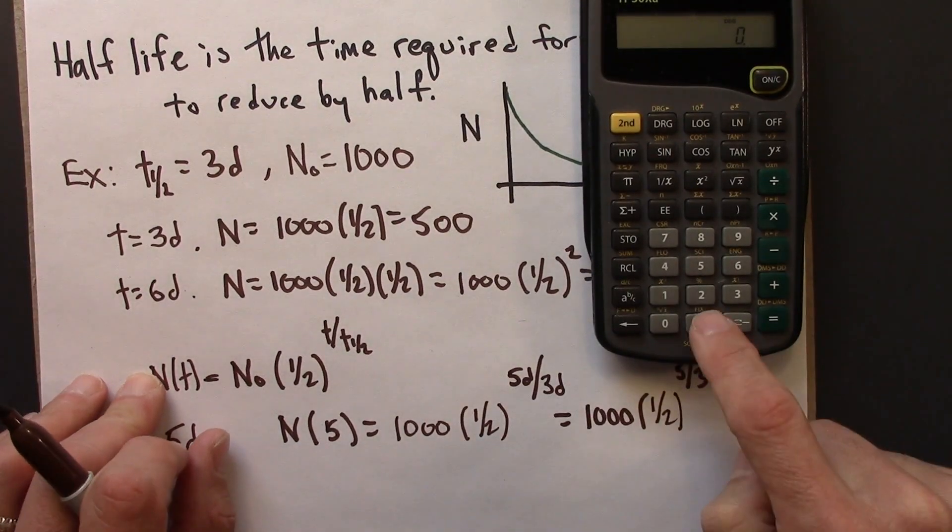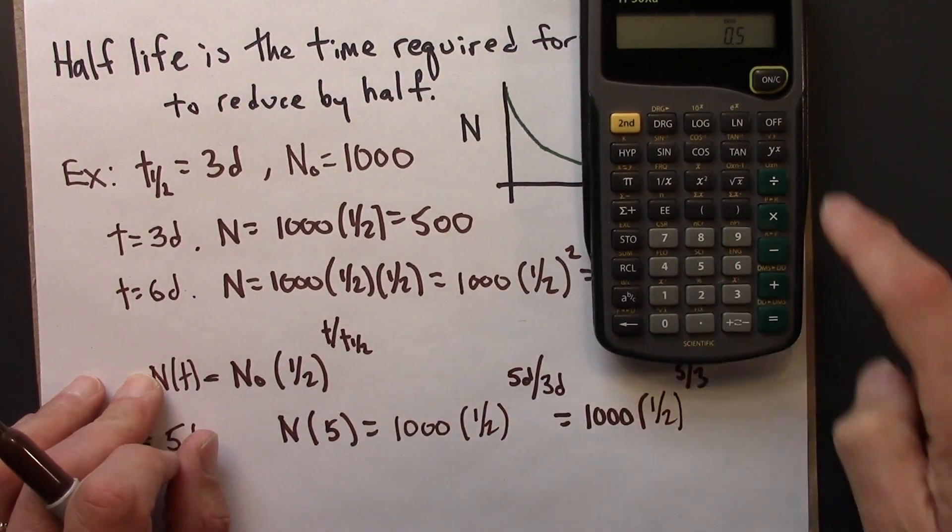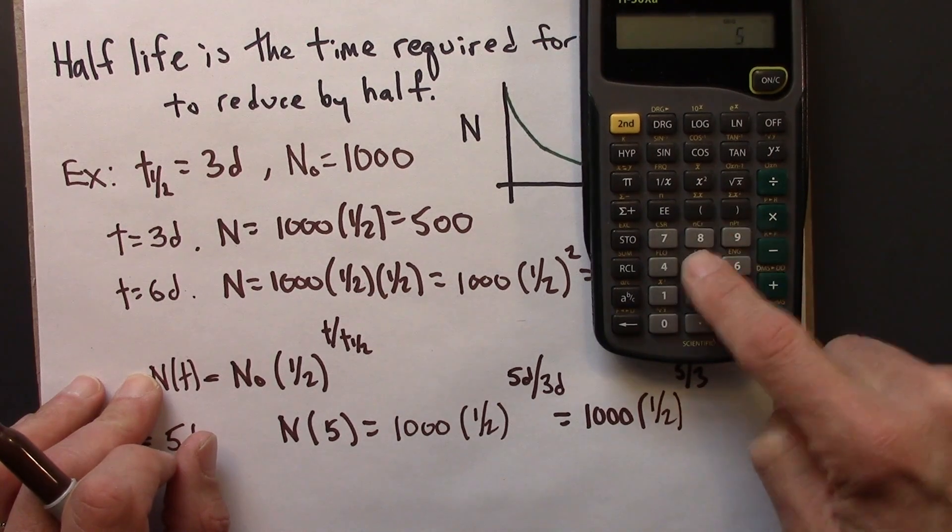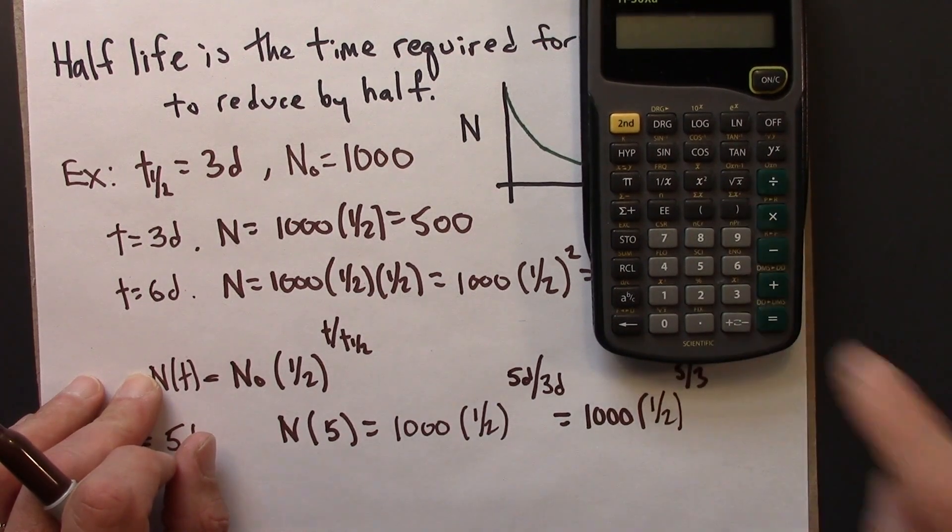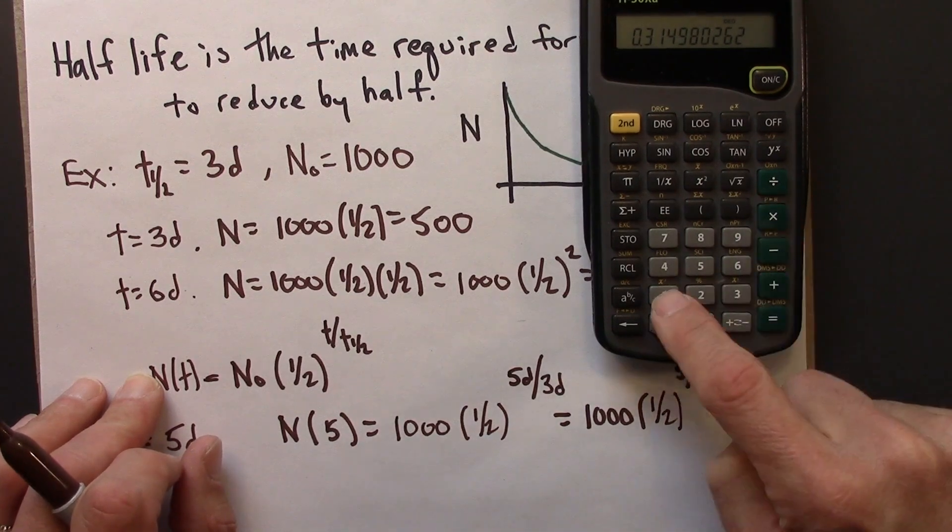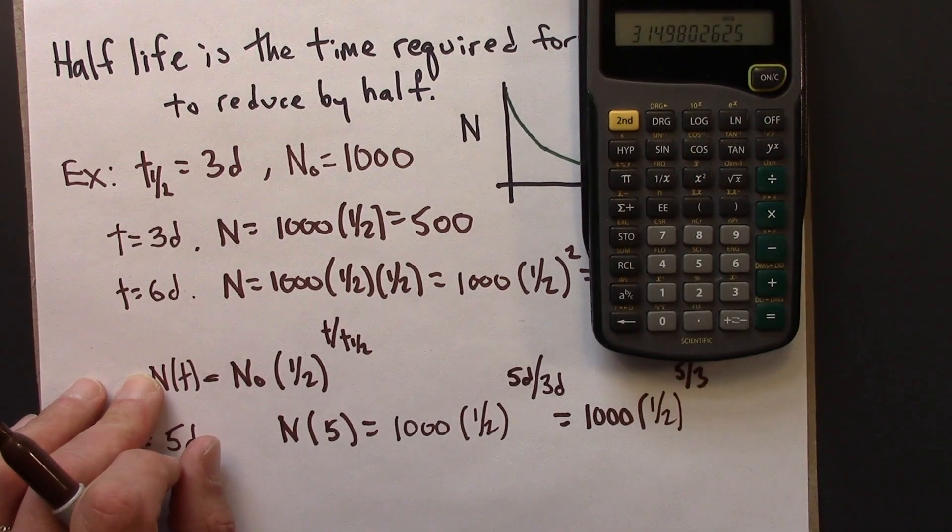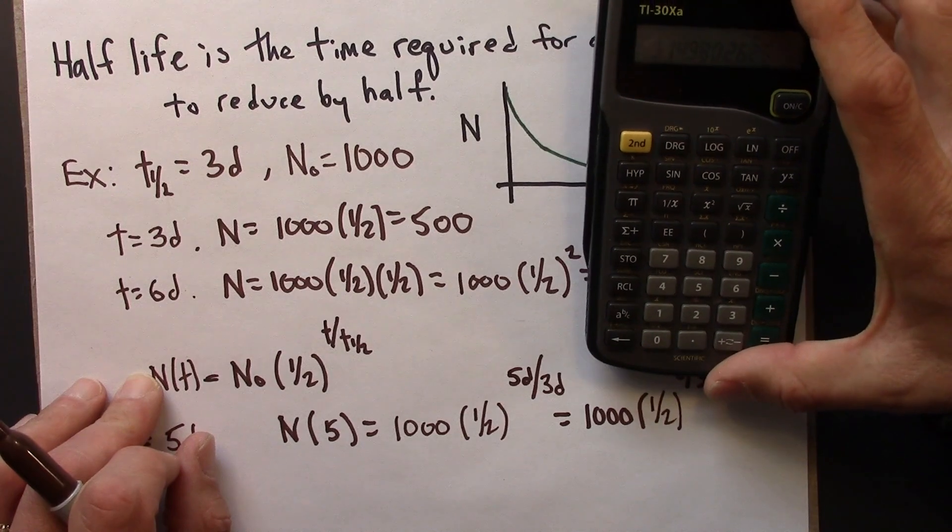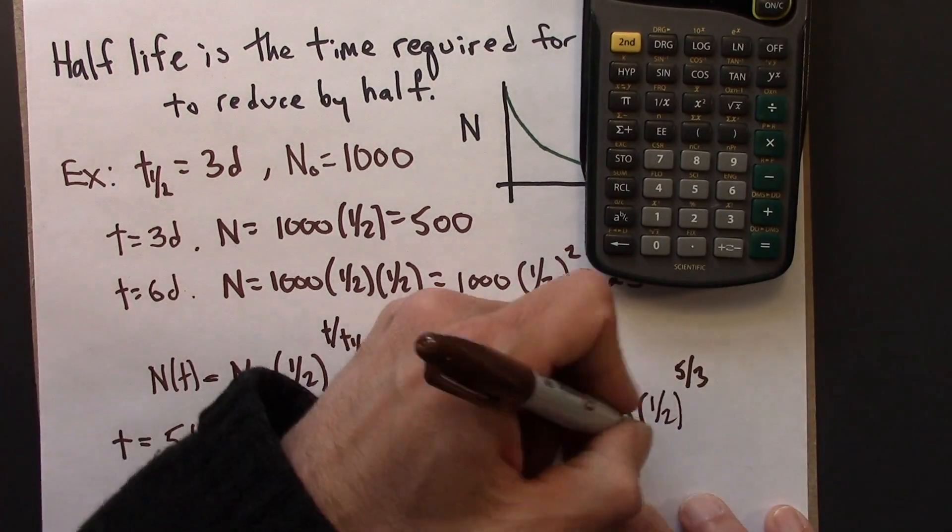So let's see, that I'll need a calculator to do. I've got a half, 0.5, I'm going to raise it to 5 thirds, 0.315-ish, multiply by a thousand, and I get 314.98, let's call that 315.